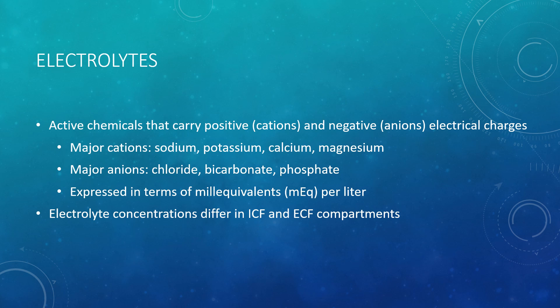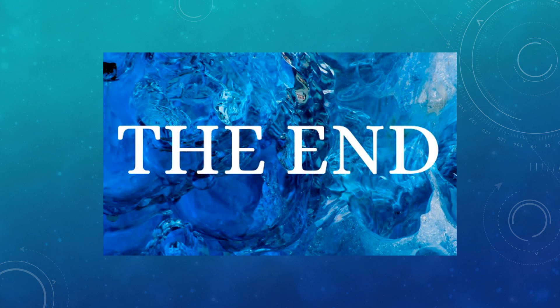The last topic related to fluid and electrolytes is electrolytes themselves. Electrolytes are negatively or positively charged chemicals found in the body. Positively charged electrolytes are called cations — the major cations are sodium, potassium, calcium, and magnesium. Note that potassium has the elemental symbol K and is not the same as vitamin K. Negatively charged electrolytes are called anions — the major anions are chloride, bicarbonate, and phosphate. All electrolytes are measured in milliequivalents per liter or milligrams per deciliter, and their concentrations differ between intracellular and extracellular spaces. We'll discuss electrolytes in more depth in parts three and four of this lecture. This concludes part one of fluid and electrolytes.